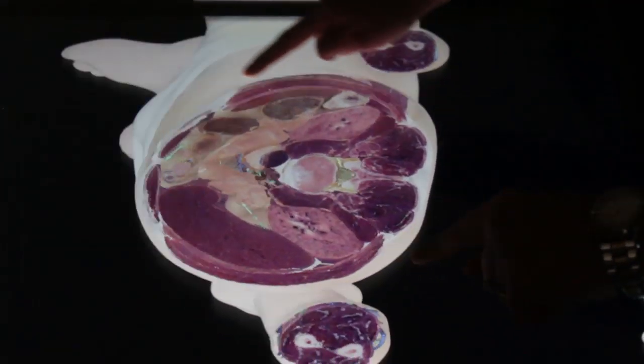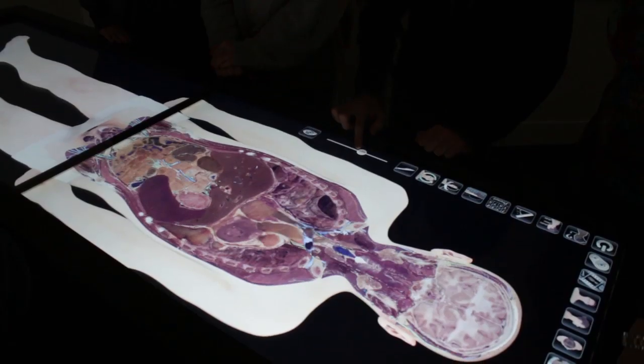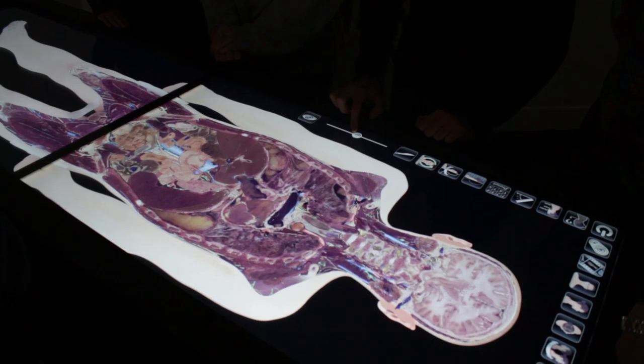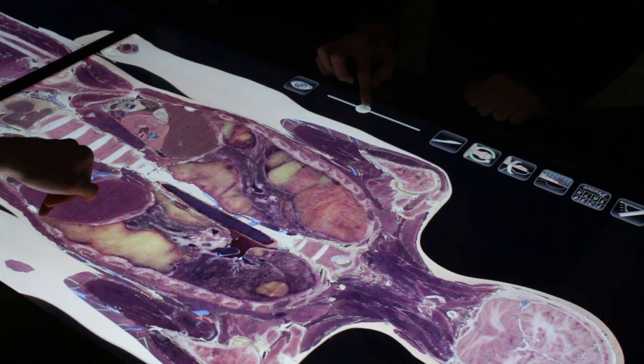An Anatomage Table is an interactive computerized teaching tool where CT scans of human beings have been reconstructed so that students can look through them in a digital way. They're able to take slices through different planes, identify organs and relate them to their anatomical positions, and they're able to build up and take away layers, so it gives them a really good overview of human anatomy.